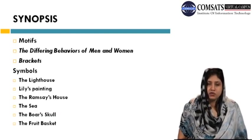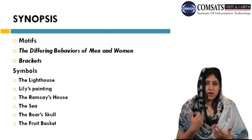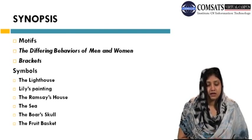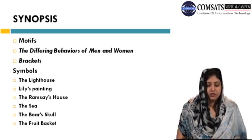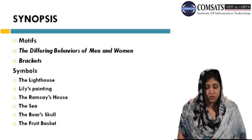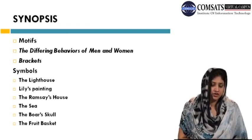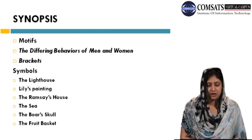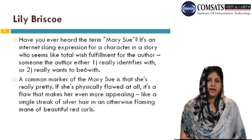Virginia Woolf's work is full of social themes, and she adds weightage and strengthens her themes through the use of motifs and symbols. We will look into the differing behaviors of men and women as a motif, the use of brackets and parentheses throughout the text, and the symbols she uses — most prominently the lighthouse itself, then Lily's painting, the Ramseys' house, the boar's skull, the food basket, and so on. Let's start with Lily's character in detail.